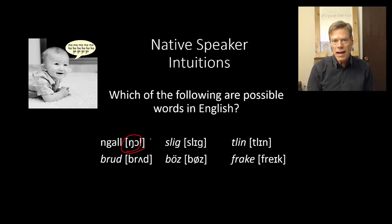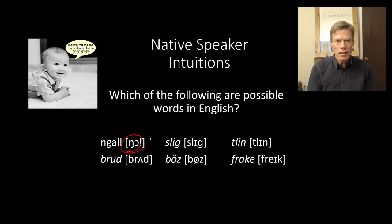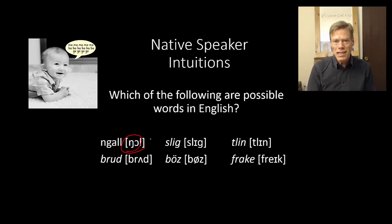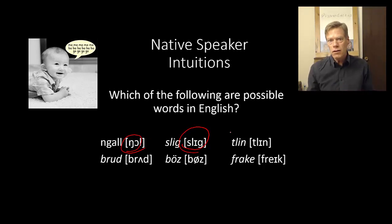Our phonotactics don't allow it. The ng sound can come at the end of a syllable, so it can come in the middle of a word as long as it's at the end of a syllable, or it can come at the end of a word. It cannot come at the beginning of a word because that would force it to be at the beginning of a syllable, and that just doesn't happen in English. On the other hand, a word like slig is perfectly fine — we have no problem with that. The phonotactics are perfect.